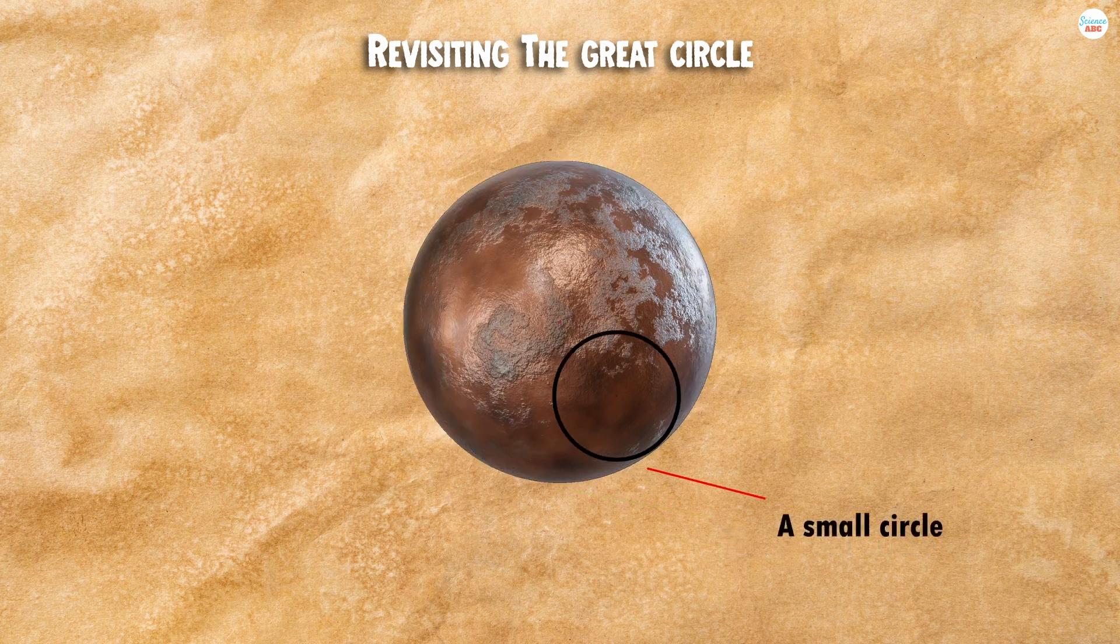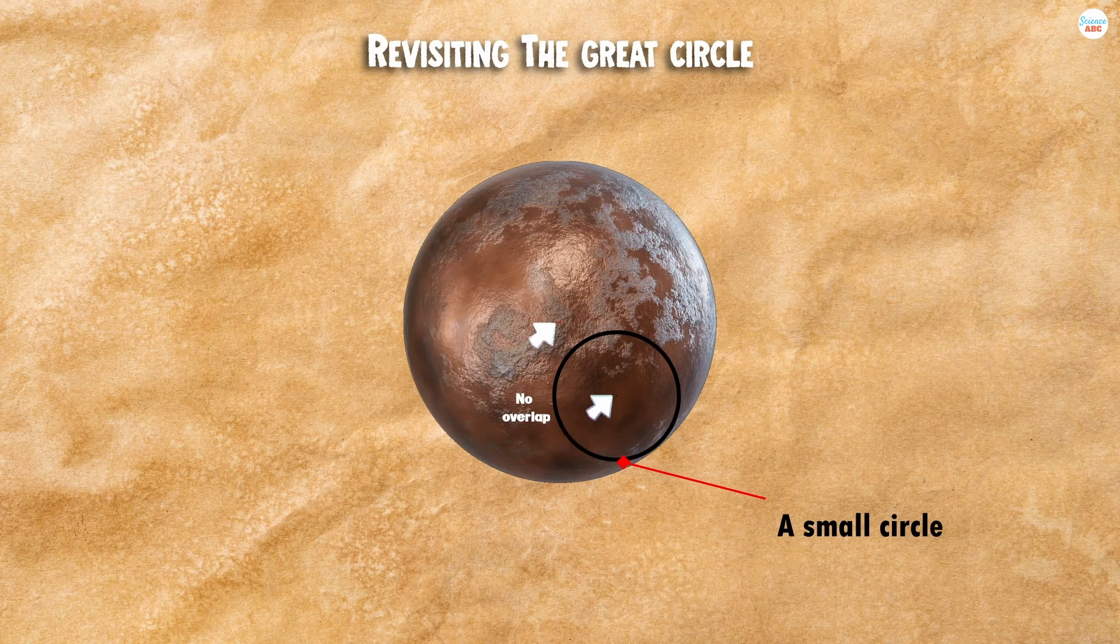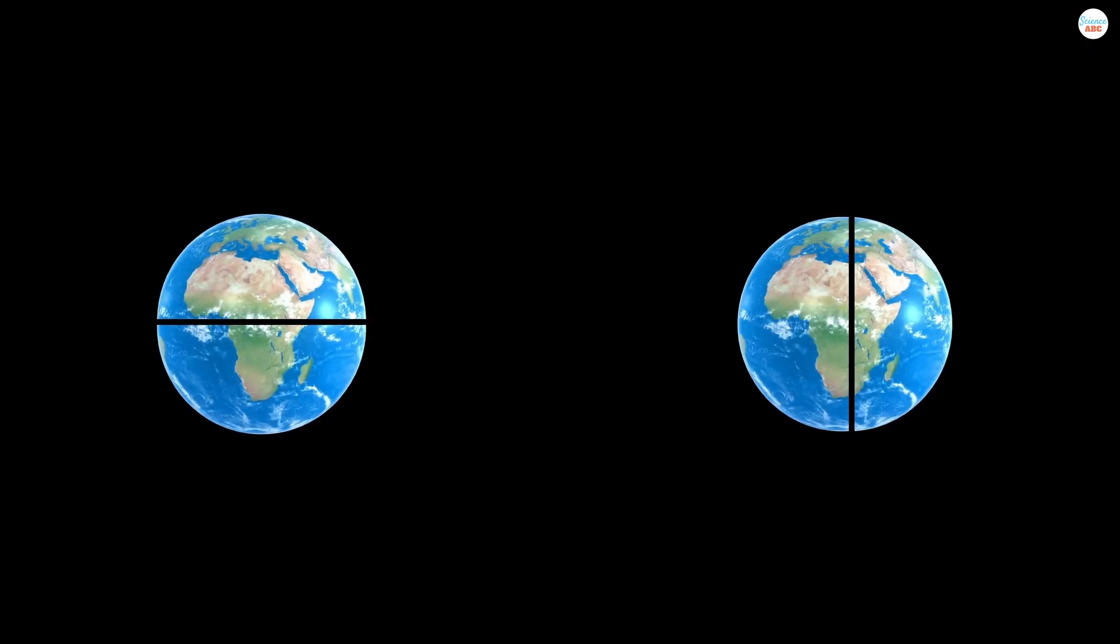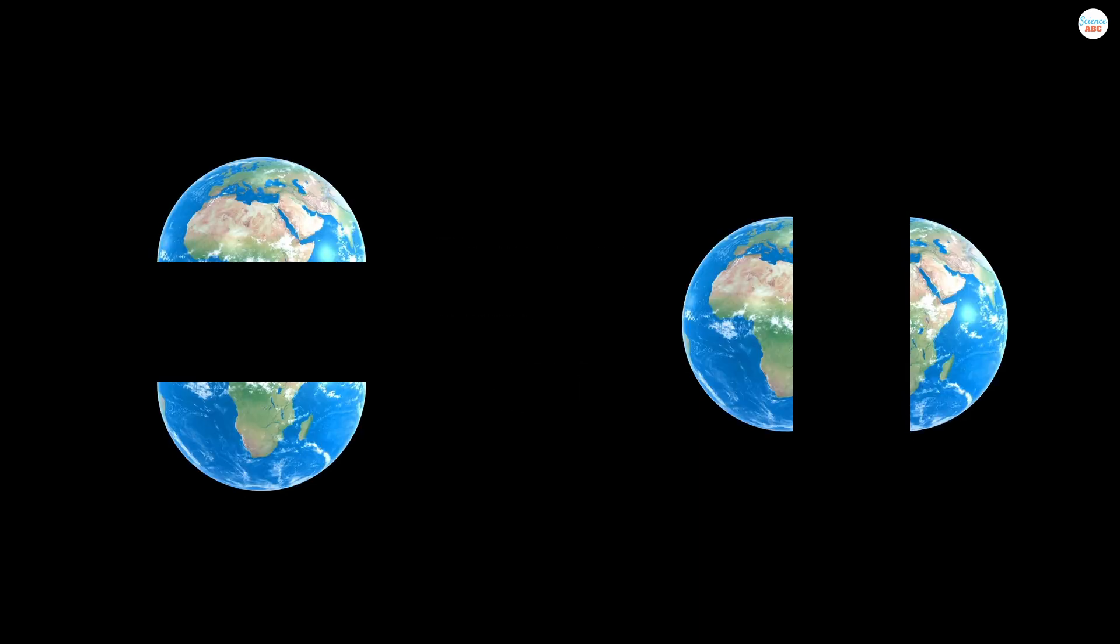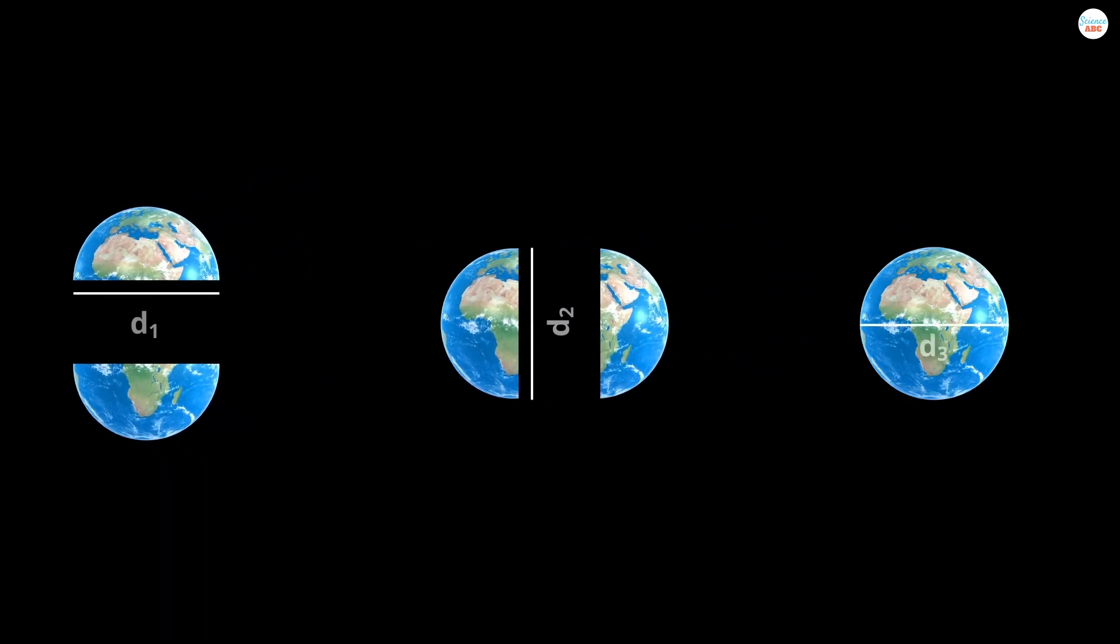A small circle, on the other hand, is when the centers of the circle and the sphere do not coincide. Imagine cutting the Earth along the equator or the poles. The resulting hemispheres would be equal, and the faces of these hemispheres would have the same diameter and center as the sphere itself.